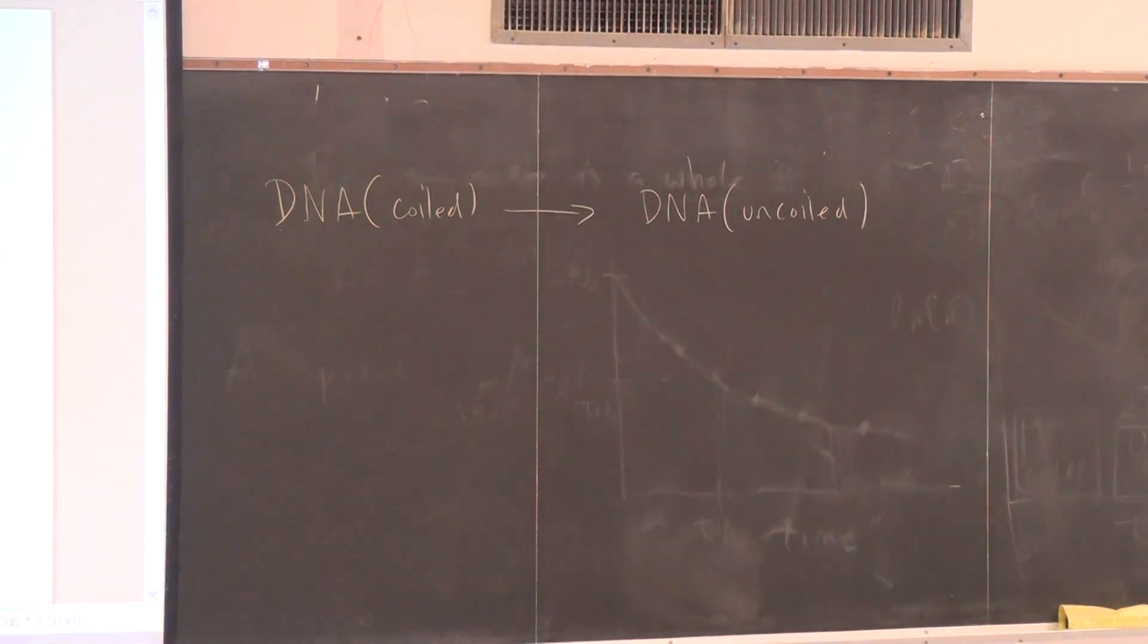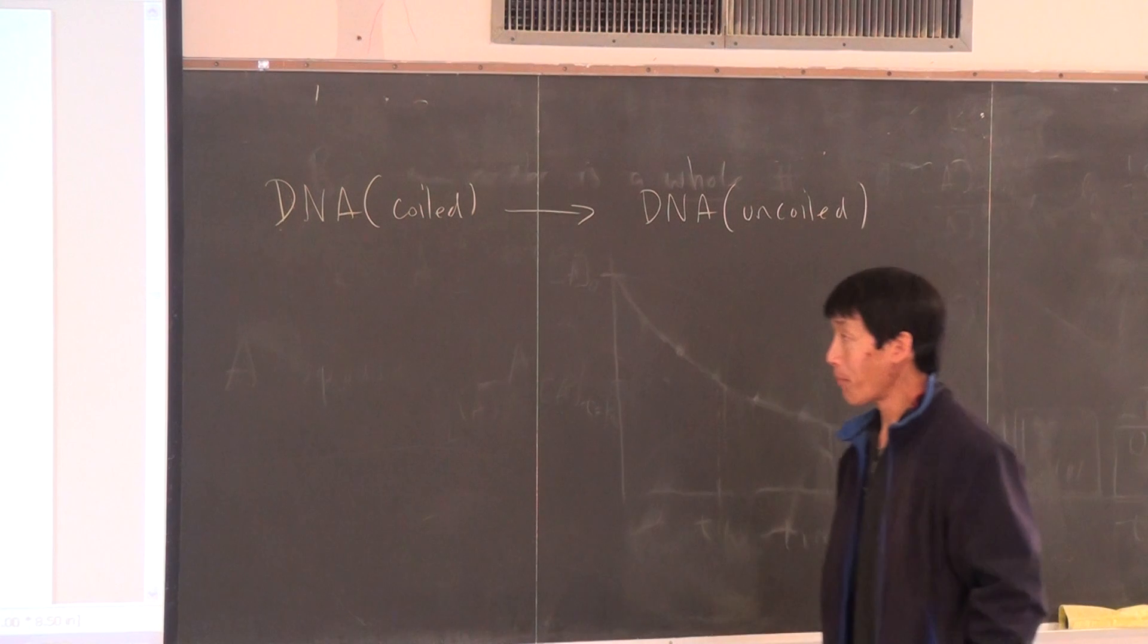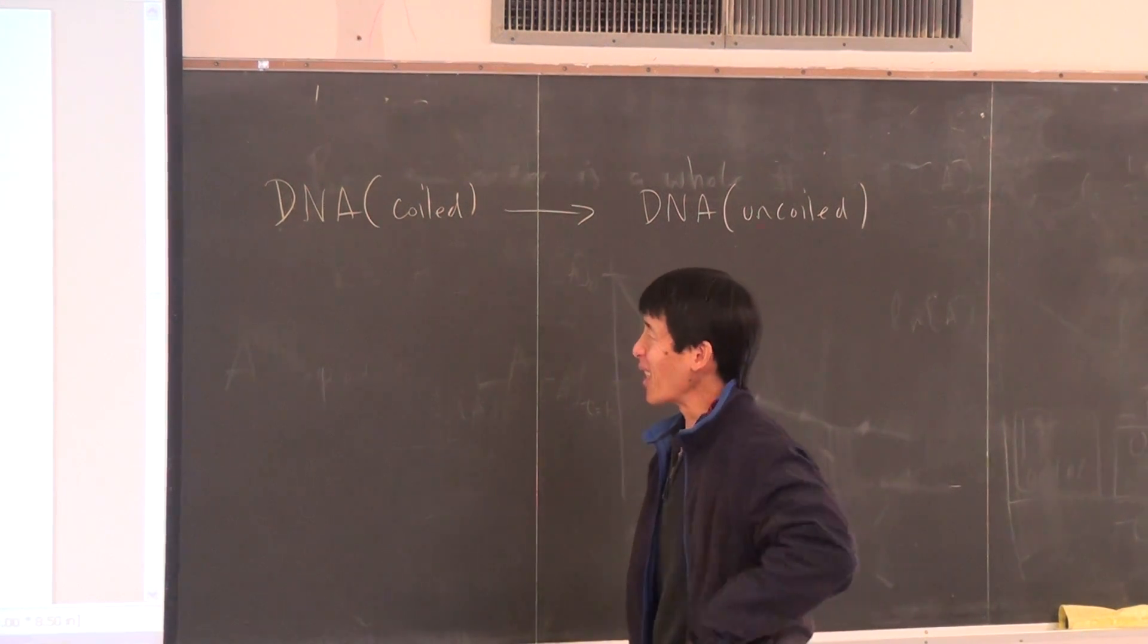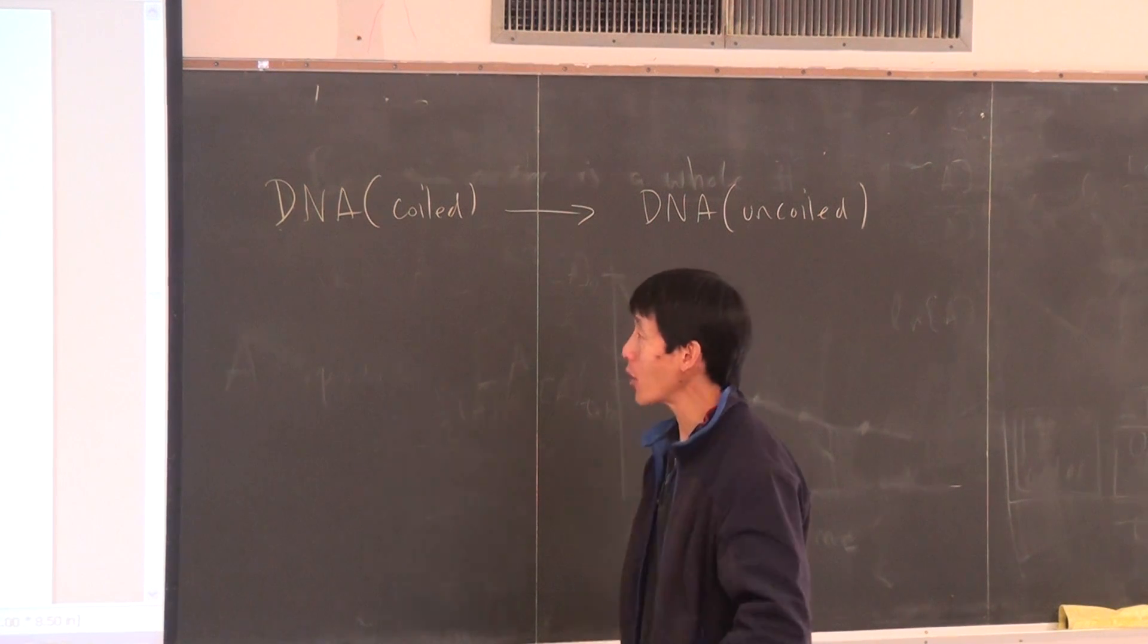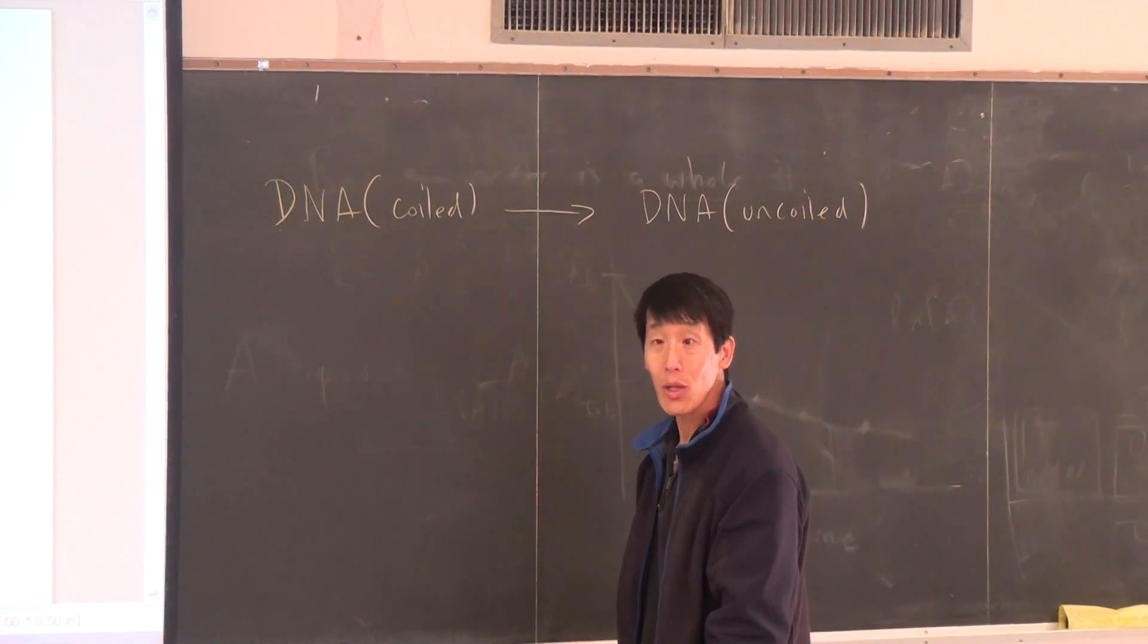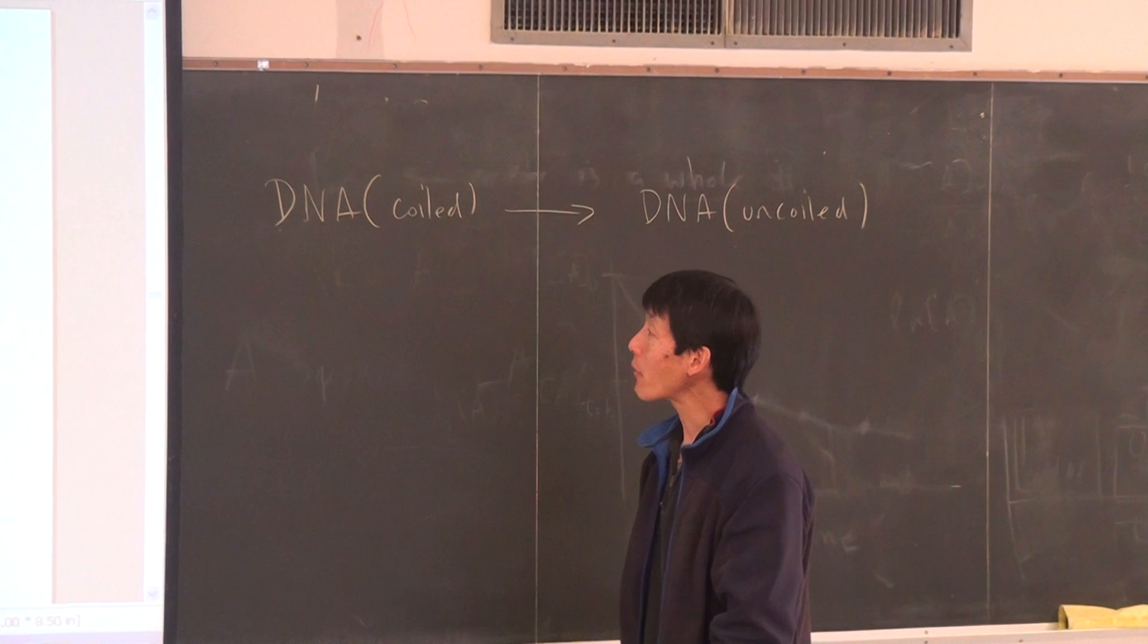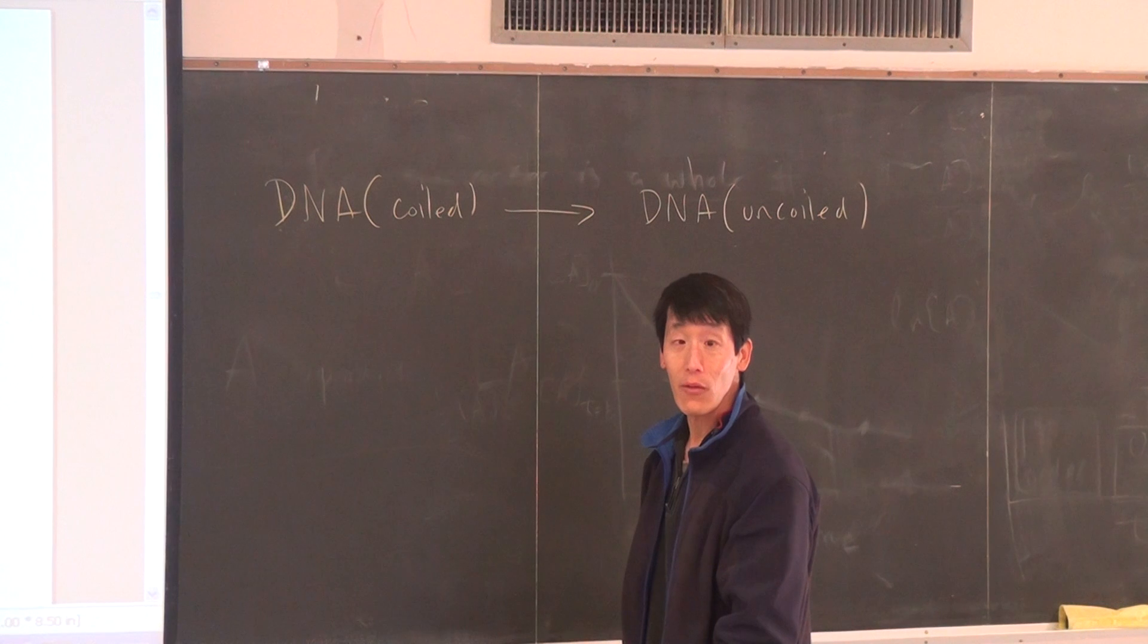And it says here, the uncoiling is the first order process with an activation energy of 430 kilojoules per mole. So based on that first sentence, does that tell us anything, and what information did that first sentence give us?